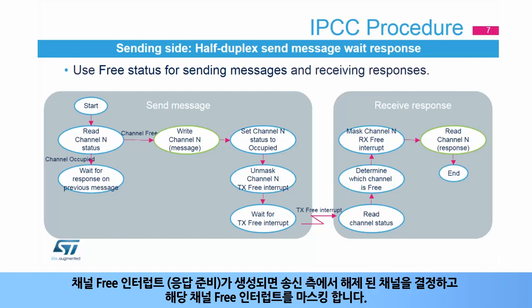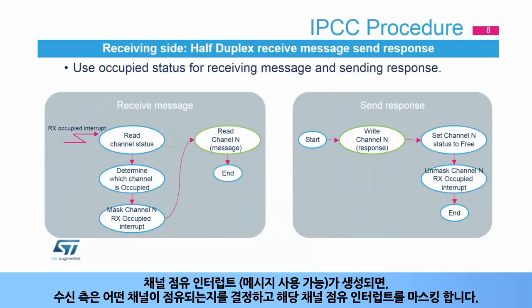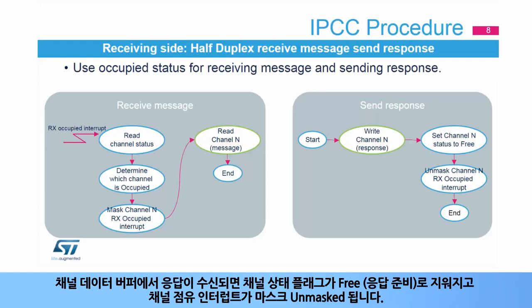When a channel-free interrupt, or response-ready, is generated, the sending side determines which channel is freed and masks the corresponding channel-free interrupt. Subsequently, the response can be read from the channel data buffer. When a channel-occupied interrupt, or message available, is generated, the receiving side determines which channel is occupied and masks the corresponding channel-occupied interrupt. Subsequently, the message can be read from the channel data buffer. The channel will only be freed once the receiving side has sent the response to the channel data buffer. Once the response is received, the channel status flag is cleared to free, or response-ready, and the channel-occupied interrupt is then unmasked.